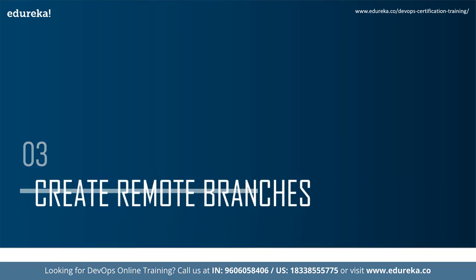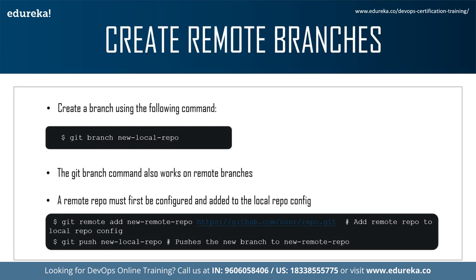The git branch command lets you create, list, rename, and delete branches. It does not let you switch between branches or put a forked history back together — for that, git branch is tightly integrated with the git checkout and git merge commands. It's important to understand that branches are just pointers to commits. When you create a branch, all git needs to do is create a new pointer without changing the repository in any other way.